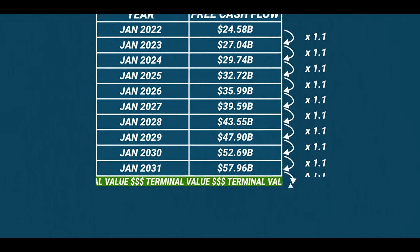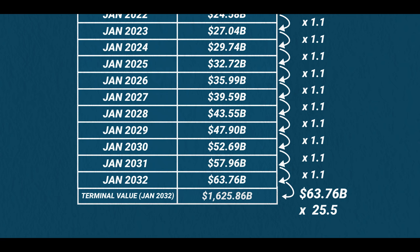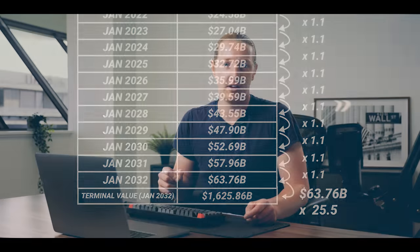25.5 is probably quite a high multiple for this business that I'm modeling the numbers off, so you have to use your own judgment a little bit as well. But let's run with 25.5 for the sake of this example. So now we multiply the 10th year of free cash flow by our free cash flow multiple to get our terminal value. And there you have it — we have all of our future cash flows. But remember, this process is finding the sum of all the discounted future cash flows.